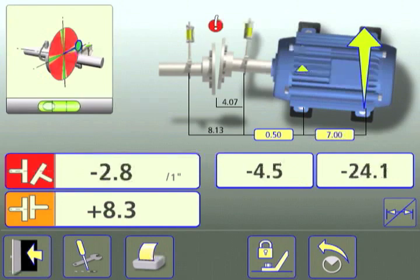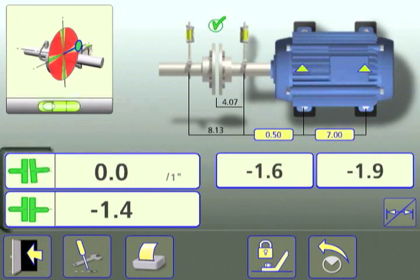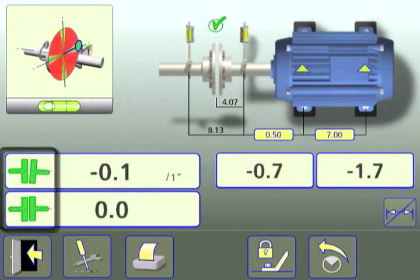Since the screen is live, the values will change as the corrections are made. The angle and offset icons will turn green and a green check will appear above the coupling when the tolerance levels have been met.